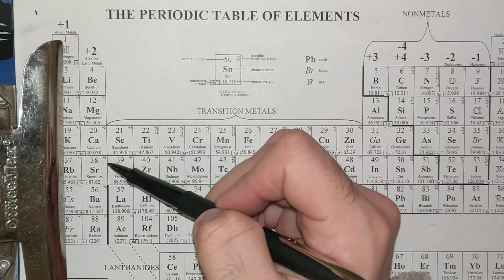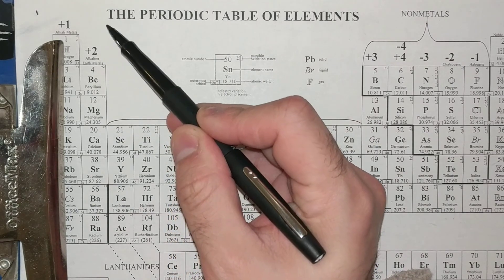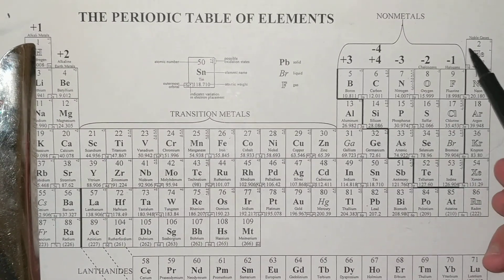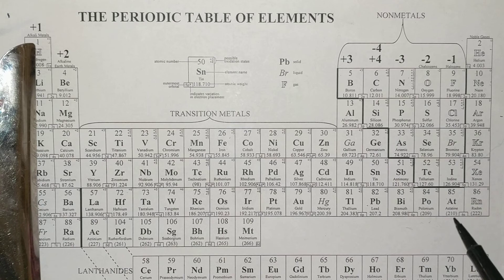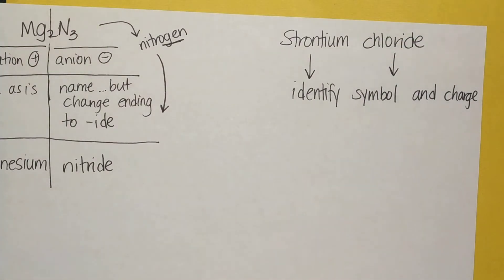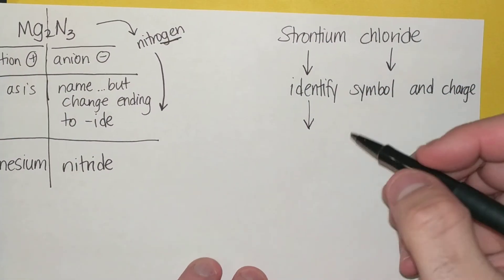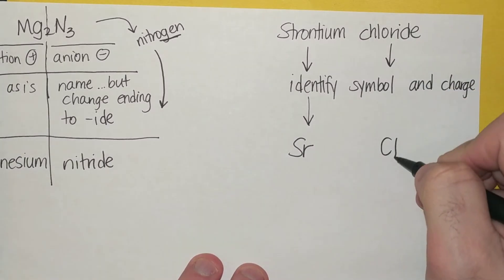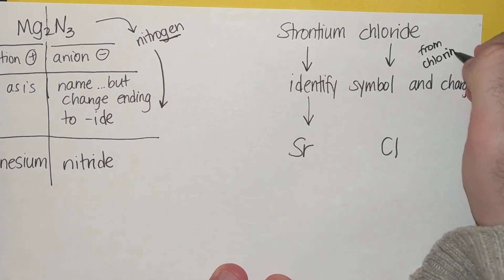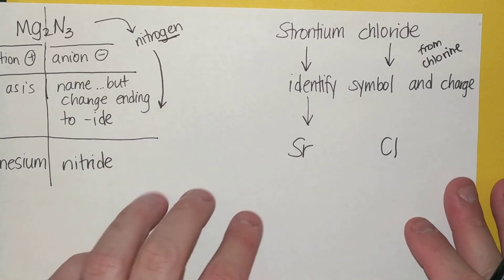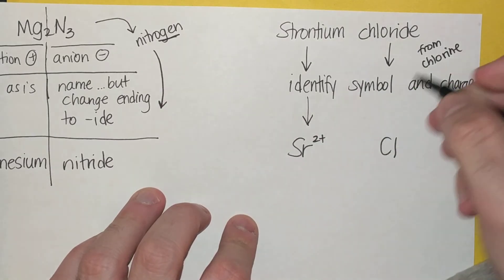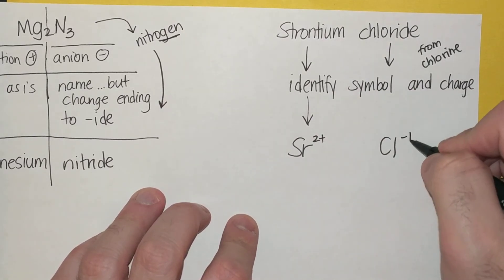Strontium is found in group two — it will form a positive two charge. Then chloride is found over here in group seven. Elements found in group seven will typically form a minus one or negative one charge. So strontium has the symbol Sr, chloride has the symbol Cl. Chloride comes from chlorine, but remember it was the anion, so the ending was changed to IDE. So we see that strontium will have a charge of positive two and chlorine or chloride will have a charge of minus one.